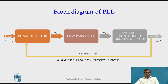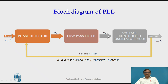The input frequency here is FI and the voltage is VI. The difference of this input and output is obtained as VE at the output of the phase detector, which is applied to the low pass filter. High frequency noise present in the error voltage is removed by the low pass filter, which passes only the low frequency or DC signal — called the control voltage VC — to the voltage controlled oscillator.